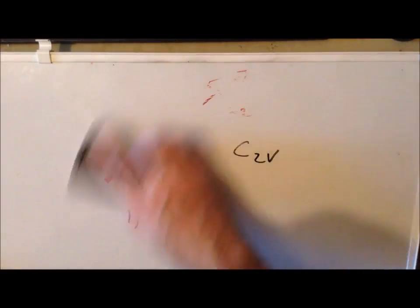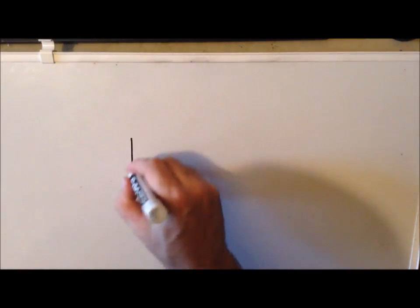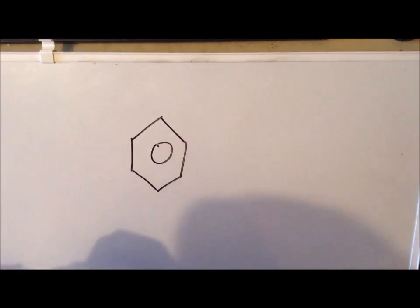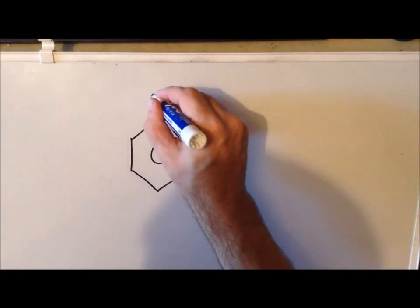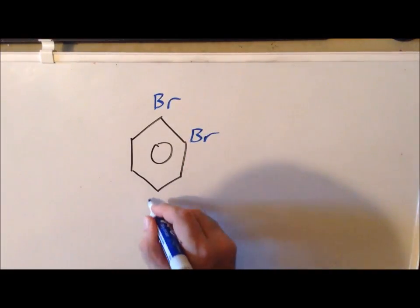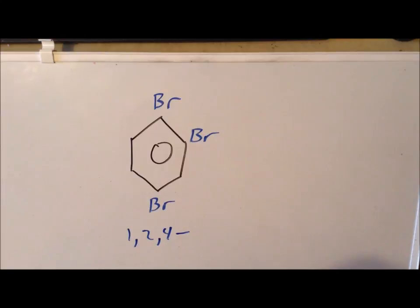Let's look at two other examples of tri-substitution for benzene. The next one to look at uses bromines — we substitute at the 1,2,4 positions, giving 1,2,4-tribromobenzene, and we want to determine the point group assignment.